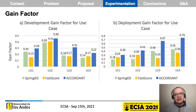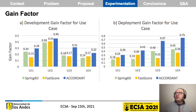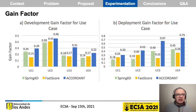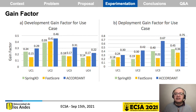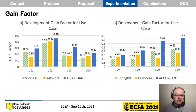Regarding the gain factor, Accordant shows better performance compared to Spring XD and FastScore. The main reason is that you can reuse the definitions made in Accordant — for example, when you define the functional viewpoint, you only have to change different versions of the deployment configuration to make vertical or horizontal scaling. You can gain time because you define the architecture once and then iterate over it without rewriting or refactoring the code.